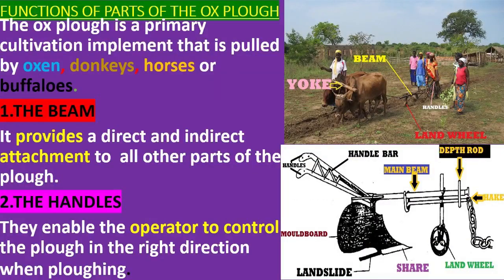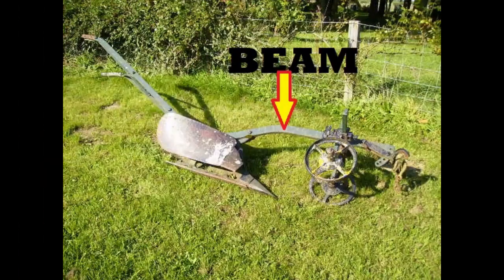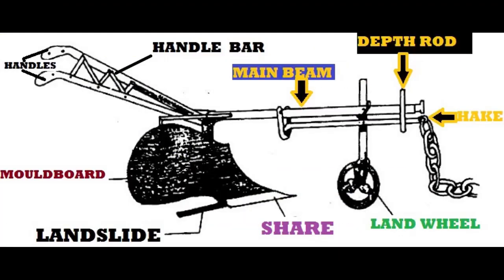Functions of parts of the ox plow. The ox plow is a primary cultivation implement that is pulled by oxen, donkeys, horses, or buffaloes. The beam provides a direct and indirect attachment to all other parts of the plow.